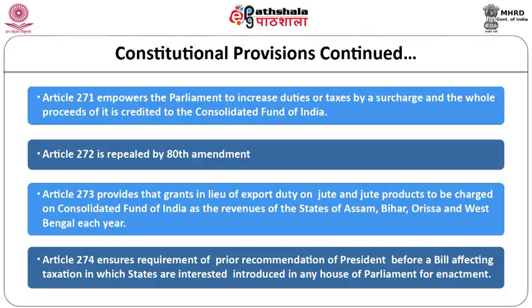Article 273 provides that the Government of India can impose export duty on jute, but in lieu of that, the Government of India gives a grant to the states of Assam, Bihar, Odisha, and West Bengal each year in lieu of that export duty.